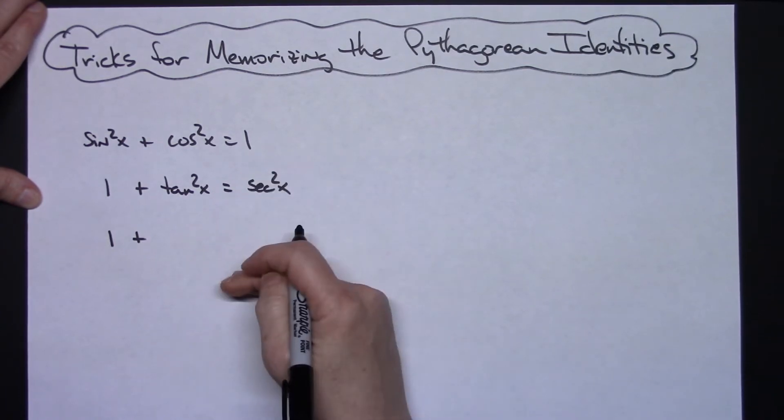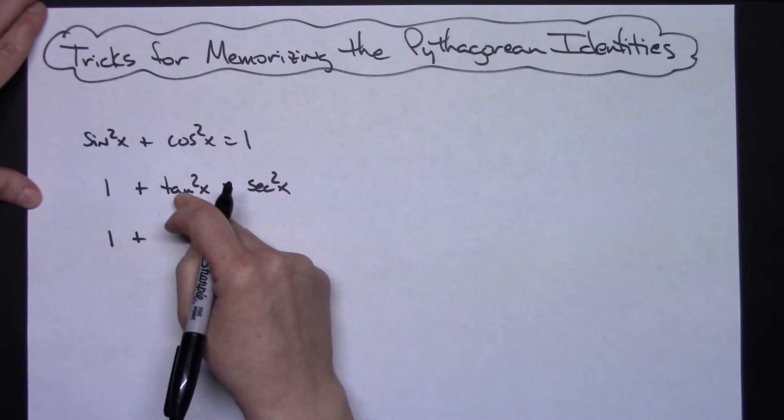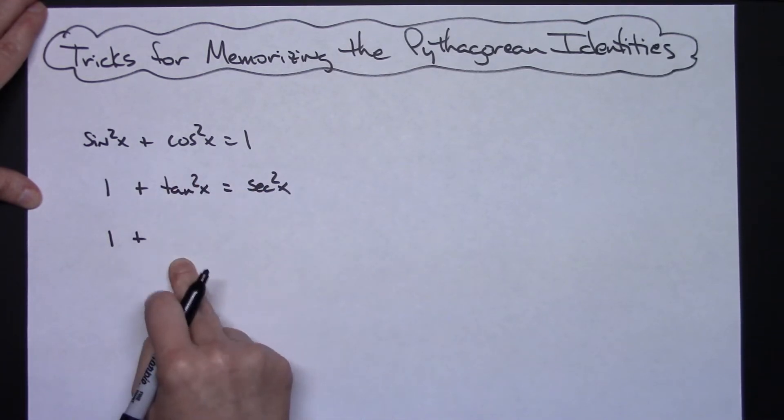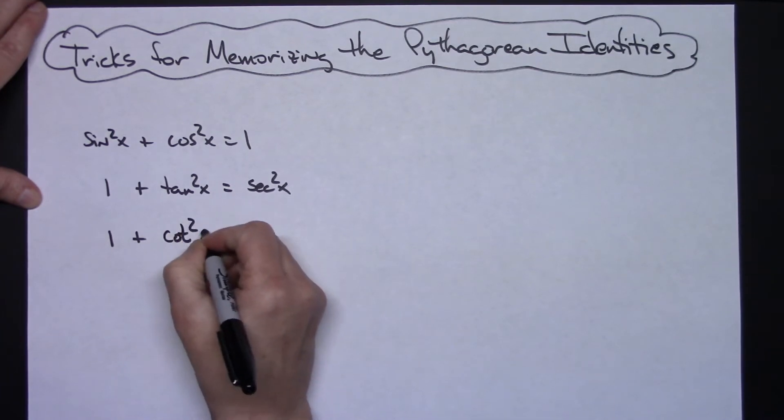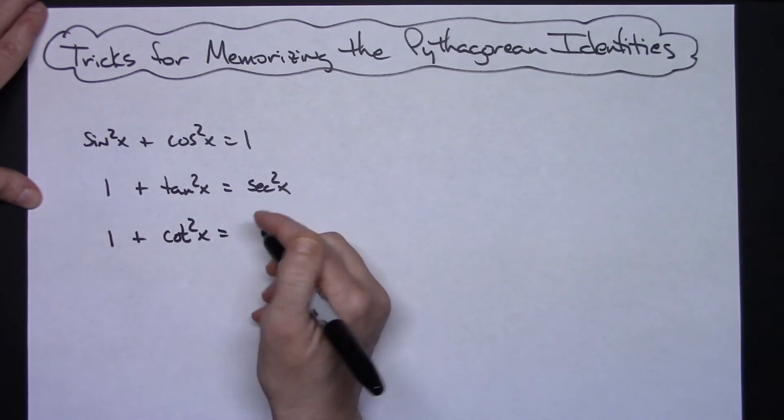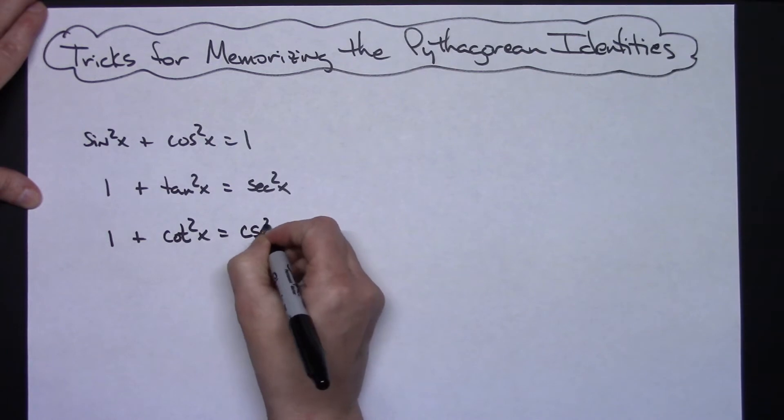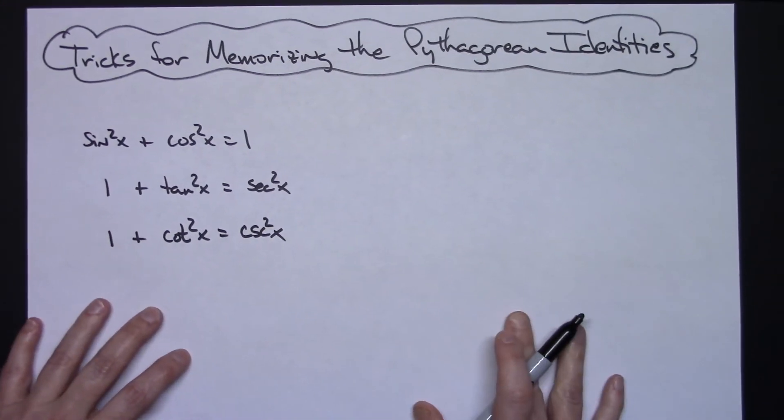And then for the last one, it just turns out to be the co-identities of each of these. So since this one is tangent, then this is cotangent. And since this is secant, then this is cosecant squared x. Okay, so that's my first method.